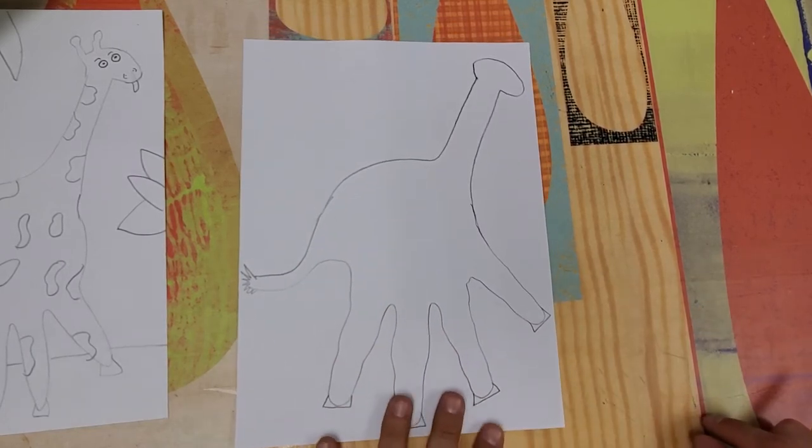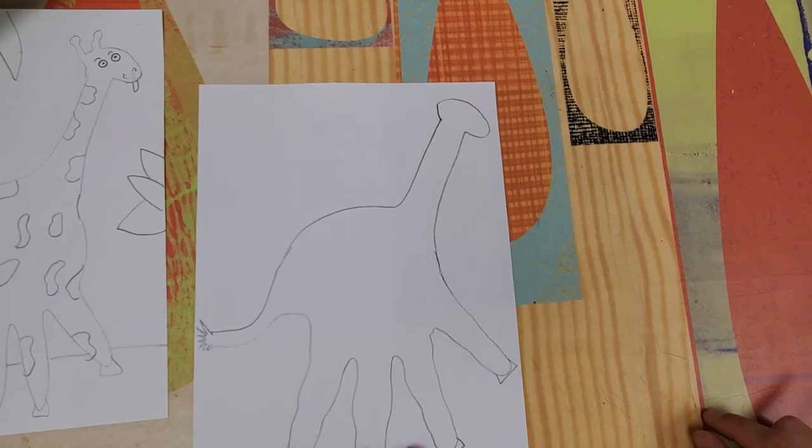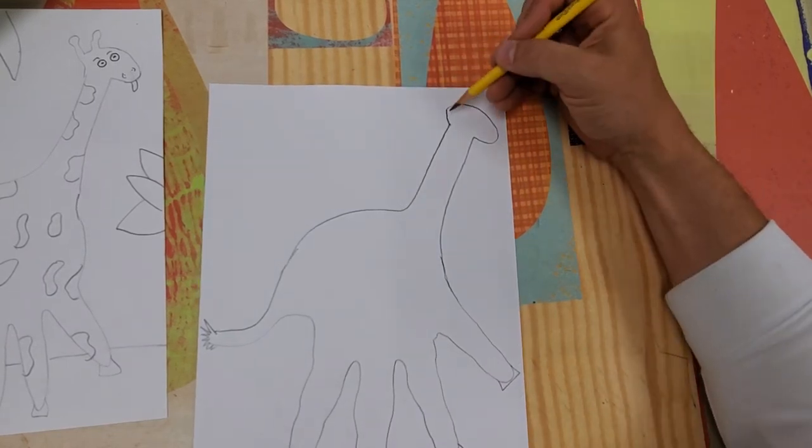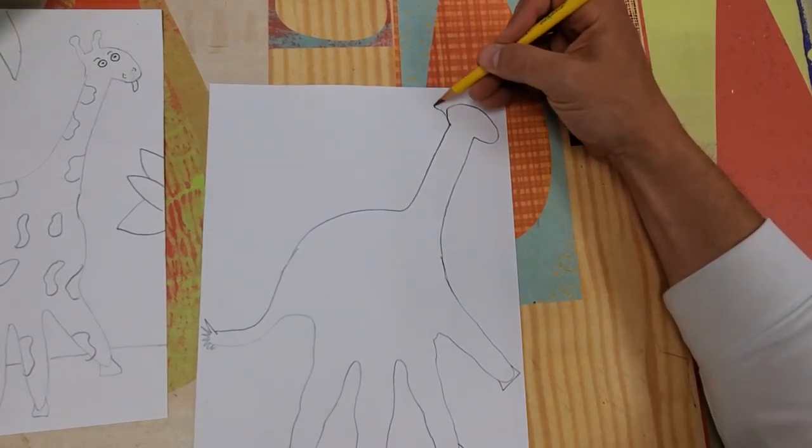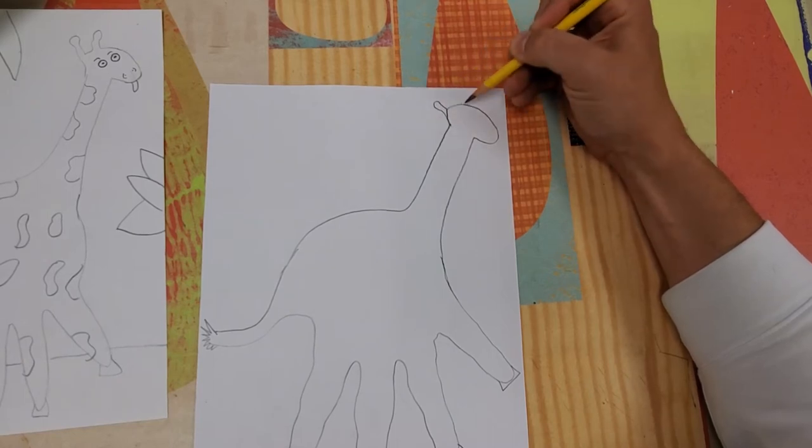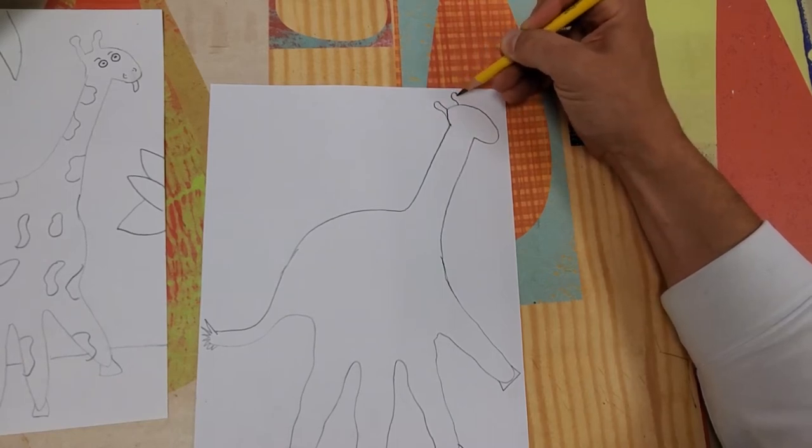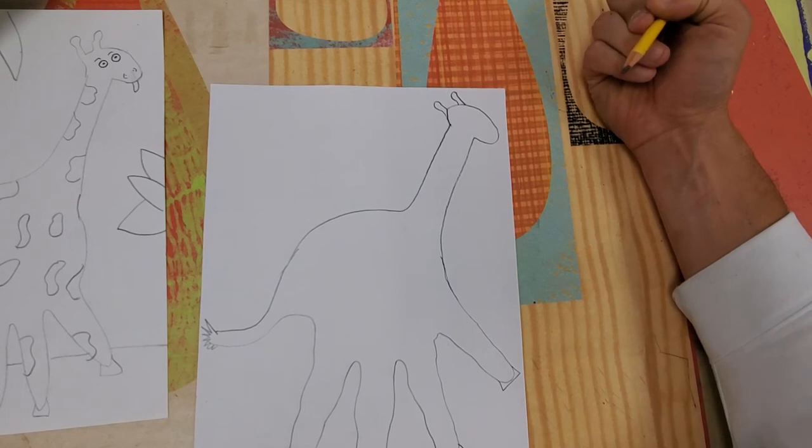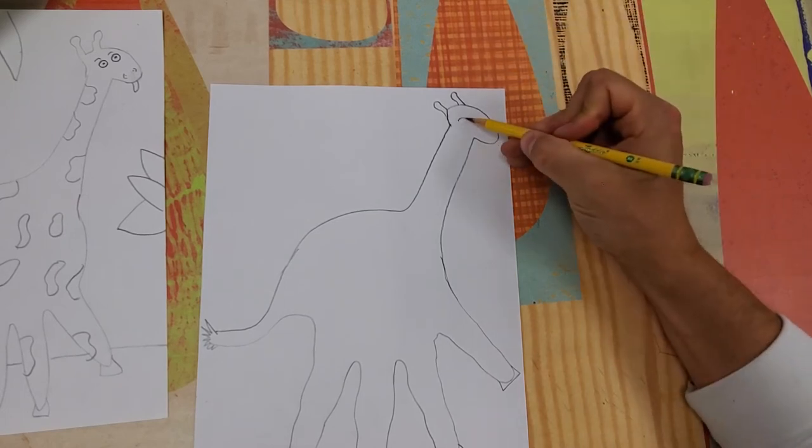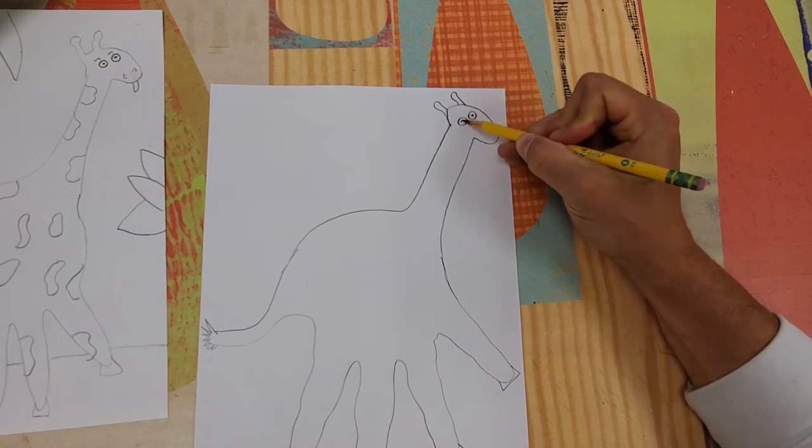Now I've got my giraffe with four legs, four feet, and I made my tail a little skinnier. Let's come up top now towards the head. Giraffes have these little shapes up here that we're going to add with a little circle on the top.